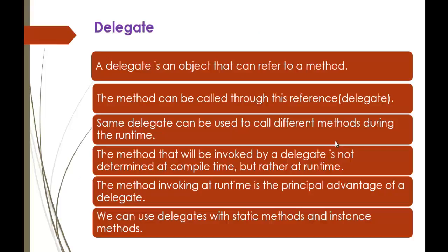A delegate is an object that can refer to a method. It means that a delegate acts like a pointer to a method. The method can be called through this reference — you can invoke a method by creating a delegate reference. The same delegate can be used to call different methods during runtime.